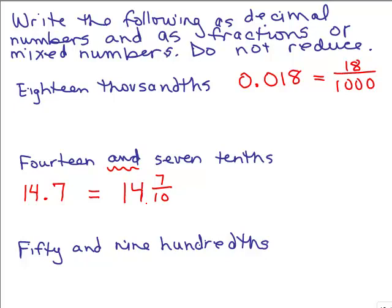Now if you wanted to write it as an improper fraction, you could. Remember how to do that? You could do 10 times 14, which is 140, plus 7. That would be your new numerator. And you keep the denominator of 10. So these all mean the same thing. This is written in decimal form. This is written as a mixed number. And this is written as an improper fraction.